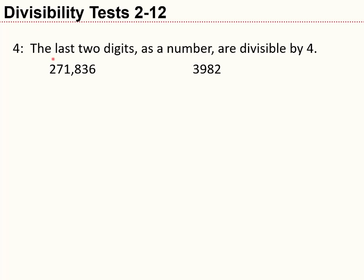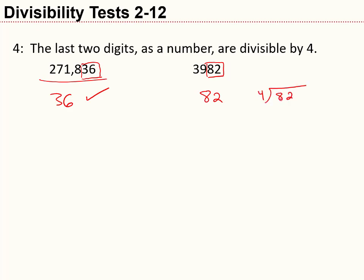Divisibility by 4: the last two digits as a number must be divisible by 4. Take 271,836 — I only need the last two digits, 36. Is 36 divisible by 4? It is — 36 is 4 times 9 — so the entire number is divisible by 4. How about 3,982? I focus on 82. Doing long division, 4 into 82 leaves a remainder of 2, so no — 3,982 is not divisible by 4.